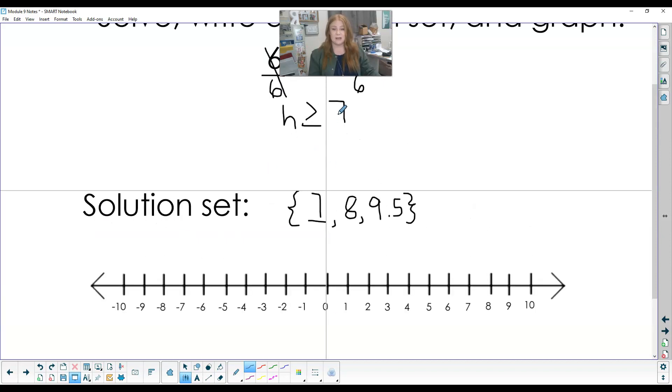So to graph that, I come back to my original problem. 7. That is the number I am graphing. Now it was included. That garage door is down. So I need to include that 7, wrap it up, fill it in, and then it's going to be greater than 7. So I want to go mark these. So I'm on 7. Here's 8. Here's 9.5.